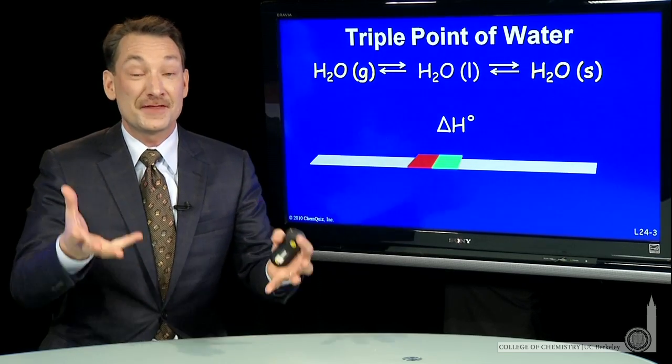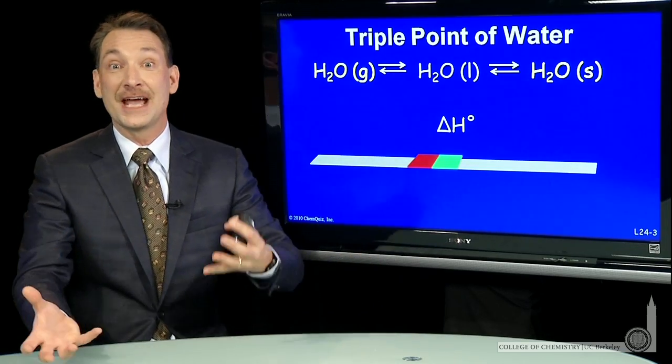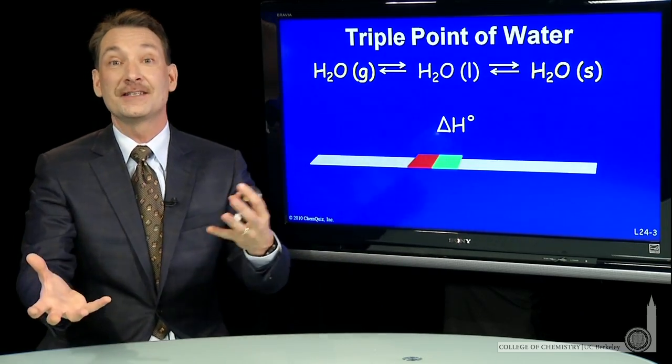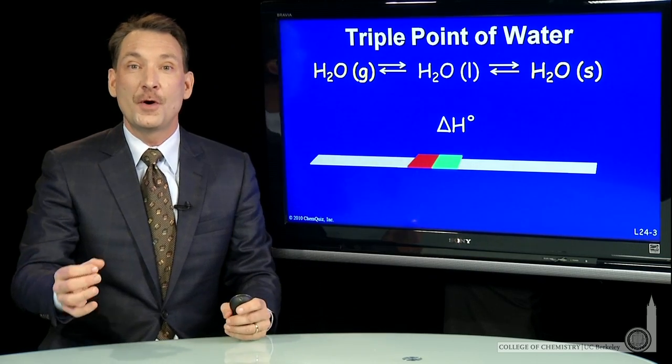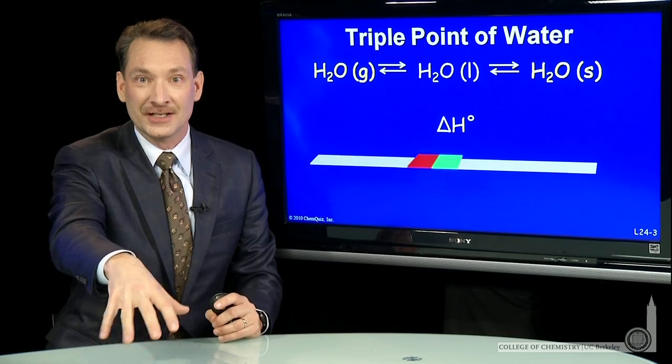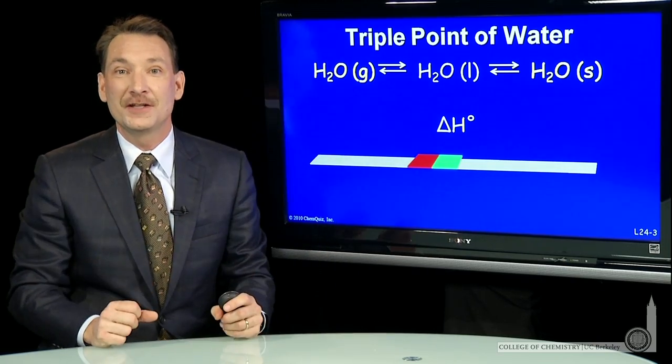Now, processes that are at equilibrium can equally likely go from products to reactants or reactants to products, or if it's a phase change, from the liquid to the solid or the solid to the liquid. So what's the difference between a process that has a natural direction and a process that's at equilibrium? Both directions are equally favored.